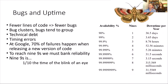Bugs and uptime: fewer lines of code equal fewer bugs. Key concerns include bug clusters, technical debt, and timing errors. At Google, 70% of failures happen when releasing a new version of code. To reach 9-9s — that's five nines of uptime — we must bank reliability. 9-9s is one-tenth the time of the blink of an eye in a year of downtime, which is pretty much no downtime at all.